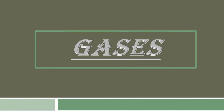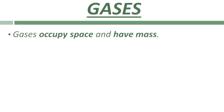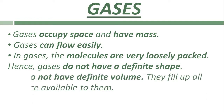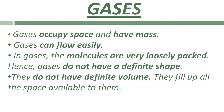Another form of matter is gaseous. The properties of gases are: gases also occupy space and have mass. Like liquids, gases can also flow — they flow easily in all directions. The arrangement of molecules in gases is very loosely packed, meaning molecules are far apart from each other with maximum space between them. Hence, gases do not have a definite or fixed shape, and they don't even have a fixed volume — they fill up all the space available to them.